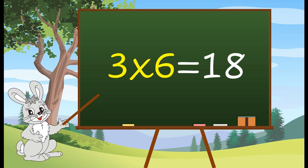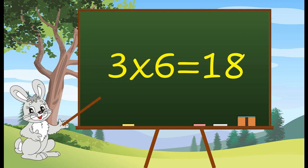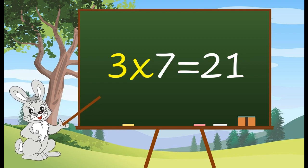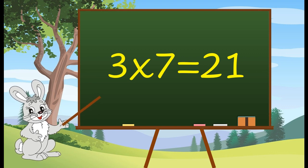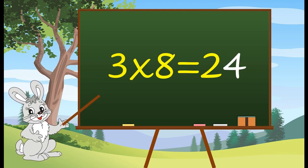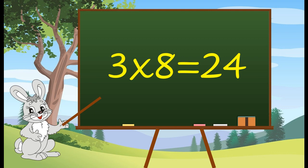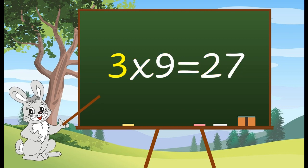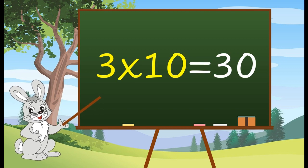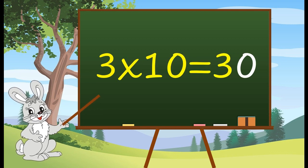3 7's are 21. 3 8's are 24. 3 9's are 27. 3 10's are 30.